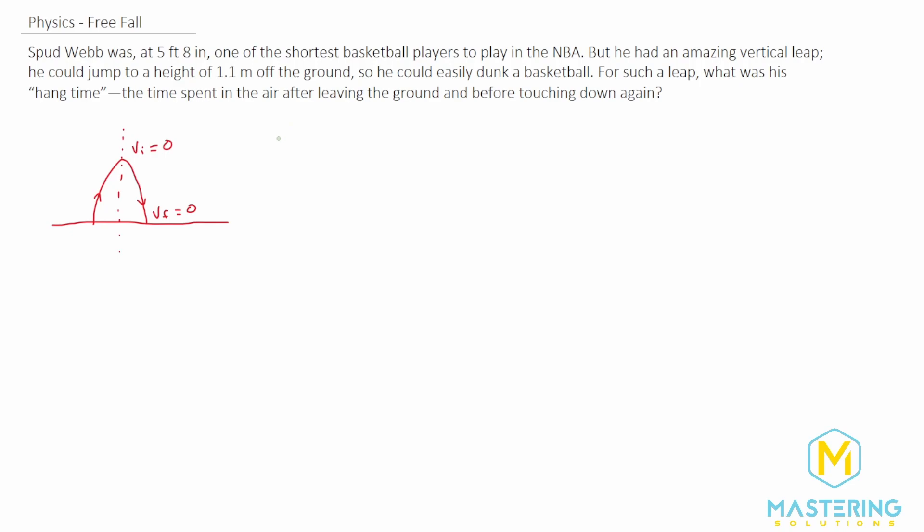Let's write a list of the variables that we're given. We know that the initial velocity from where we're going to be looking at it is zero meters per second. The y initial is going to be 1.1 meters, because he's at the top of his jump. y final is going to be zero meters, because we're saying the floor is y equals zero.